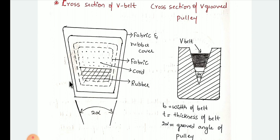These V-belts are used to transmit power between two shafts when the center distance between the shafts is relatively small. In the previous lectures, we have seen that when the center distance is more, we go for open belt drive and cross belt drive. If the center distance between the two shafts is small, then we can go for V-belt drive.